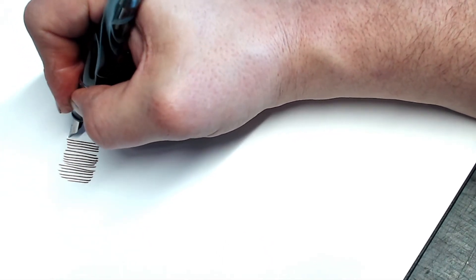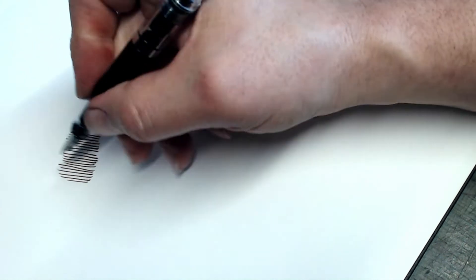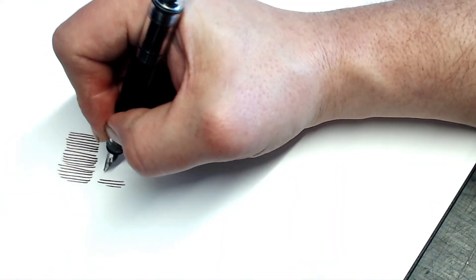It's a fairly juicy, wet medium that actually pushes a little bit towards the broad. So this is a Twsbi broad nib, and it puts down a very comparable line.